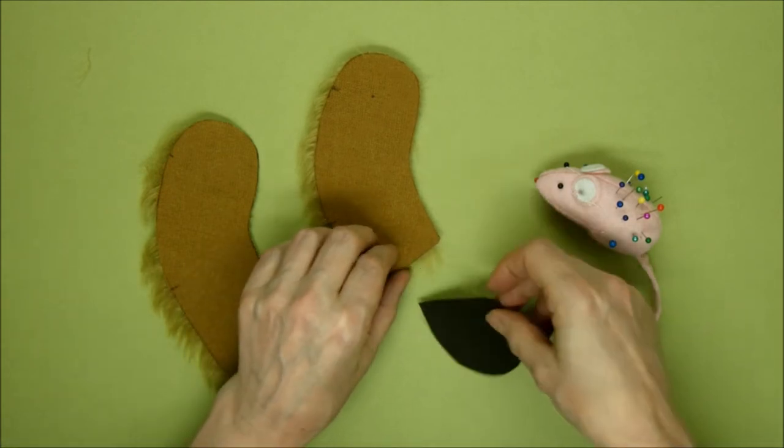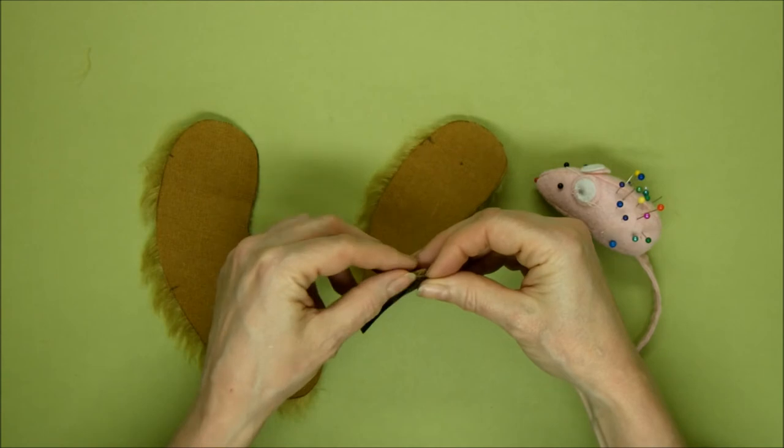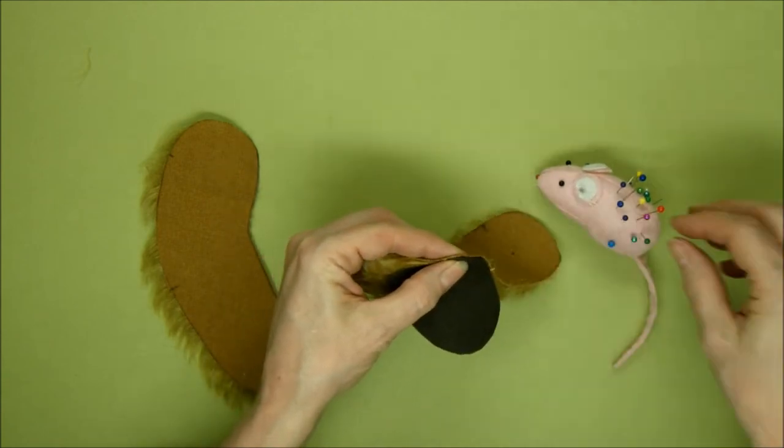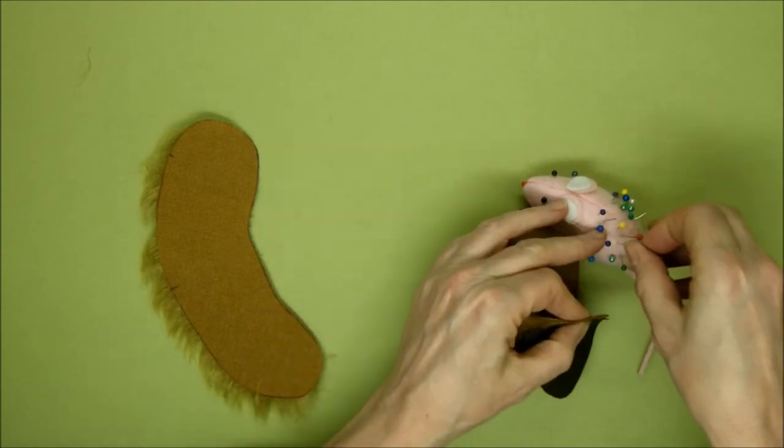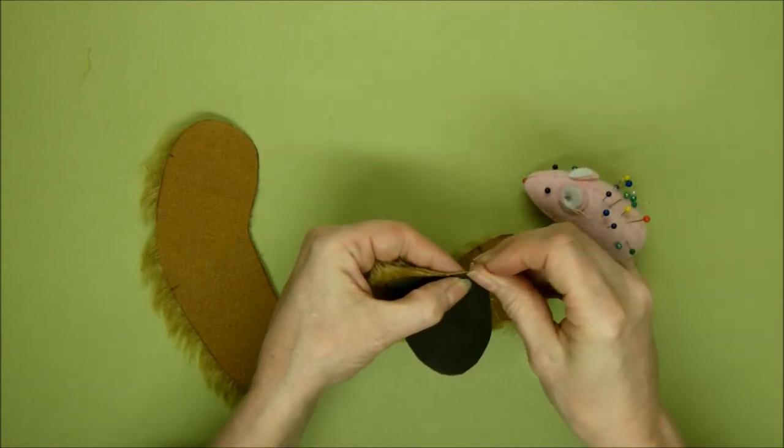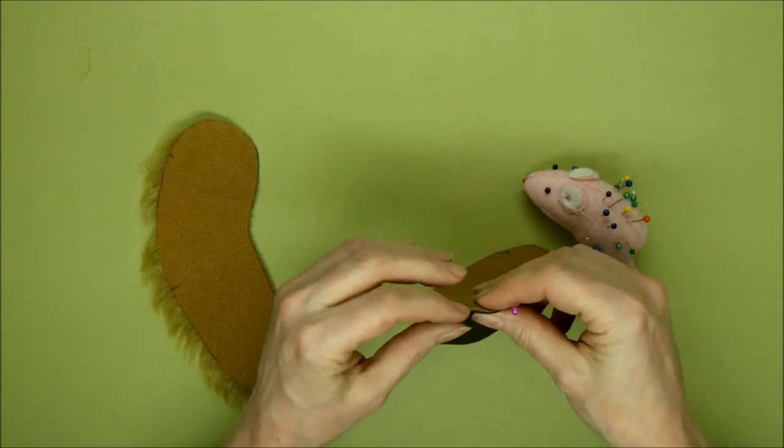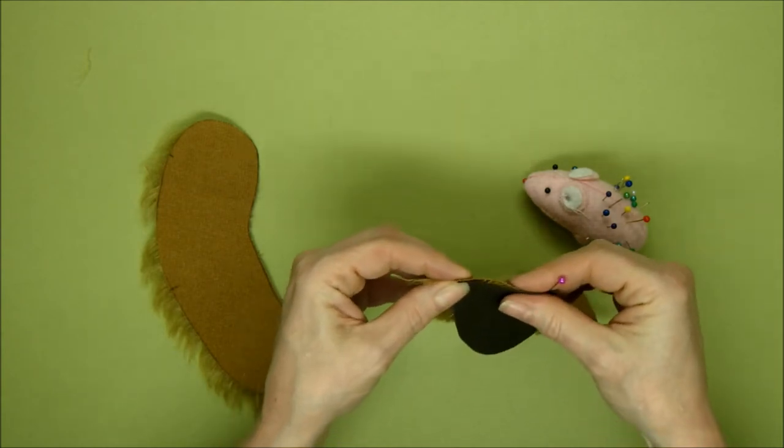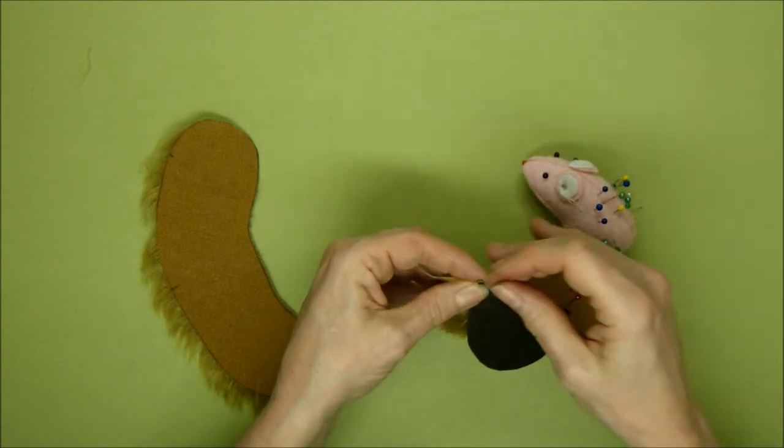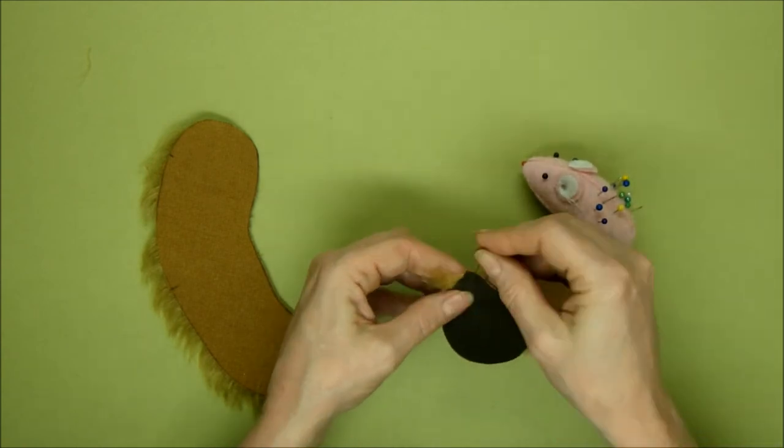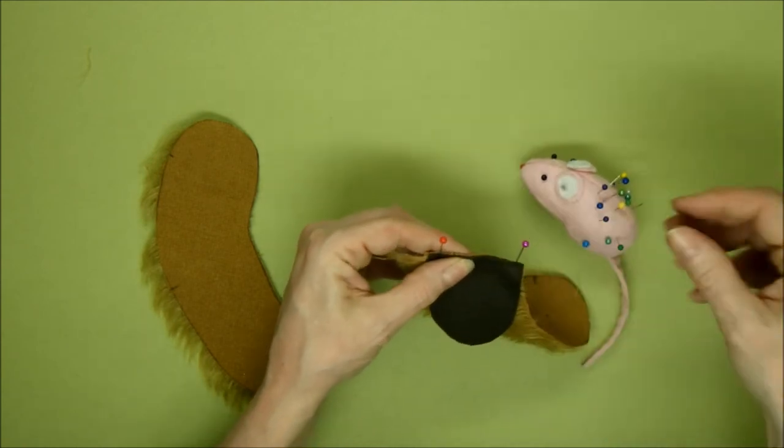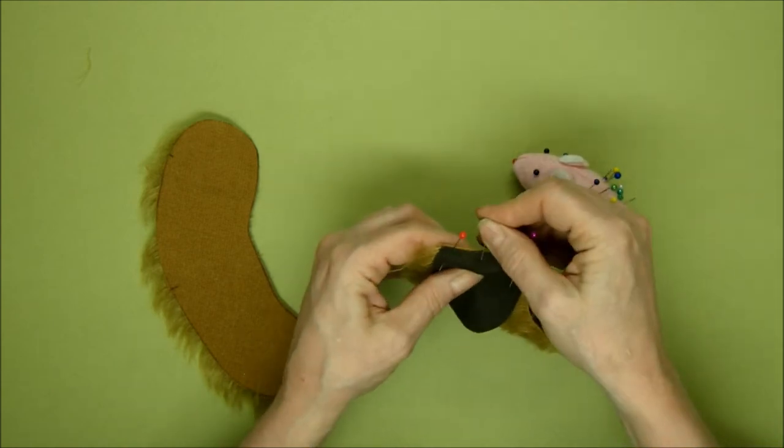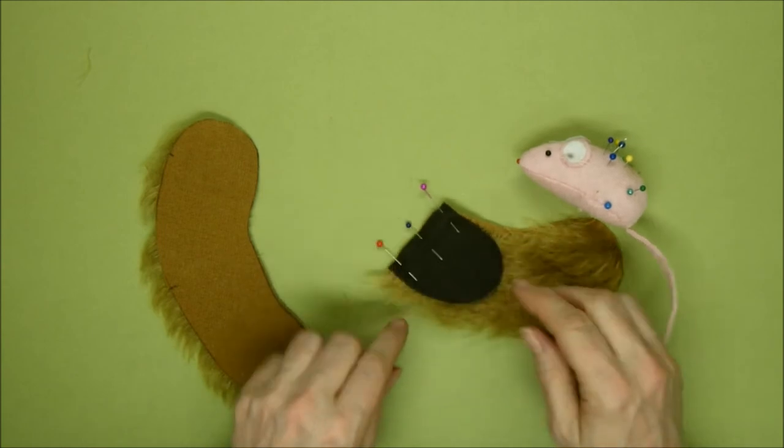Also, once you've got your right sides in and you're pinning these together, make sure that your seam allowance is correct. If you make your seam allowance too wide or too narrow, you're going to end up with an inner arm that's slightly shorter or longer than the outer arm. So check that. I'm going to use three pins, just three pins across here. And then, once that's done, sew across this section.